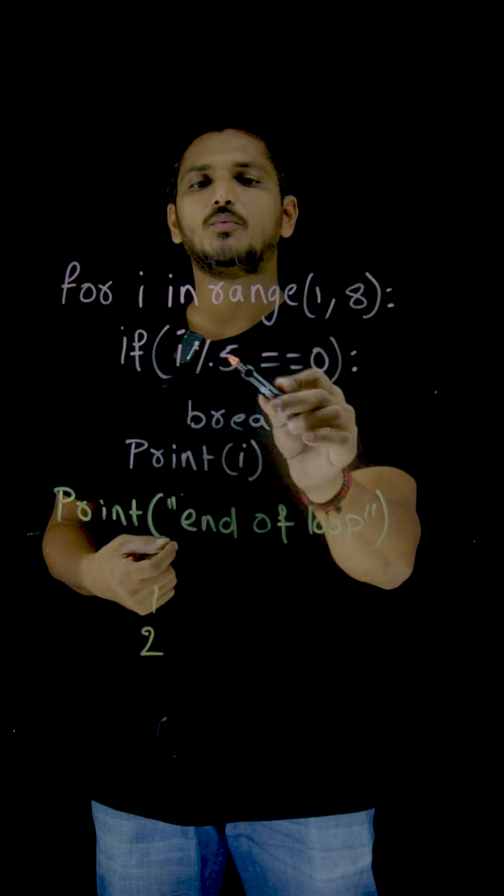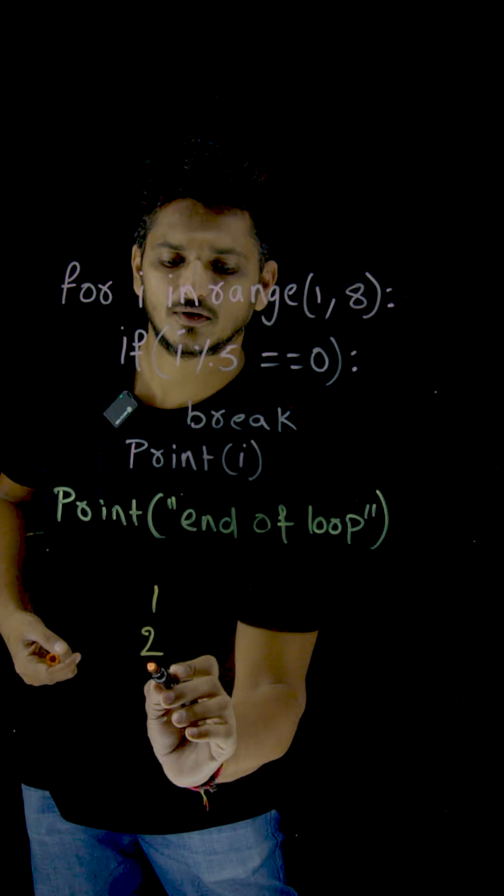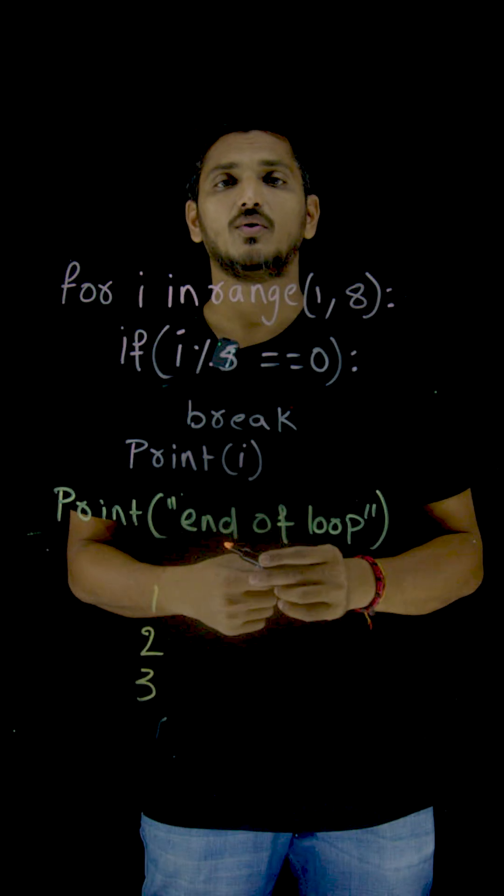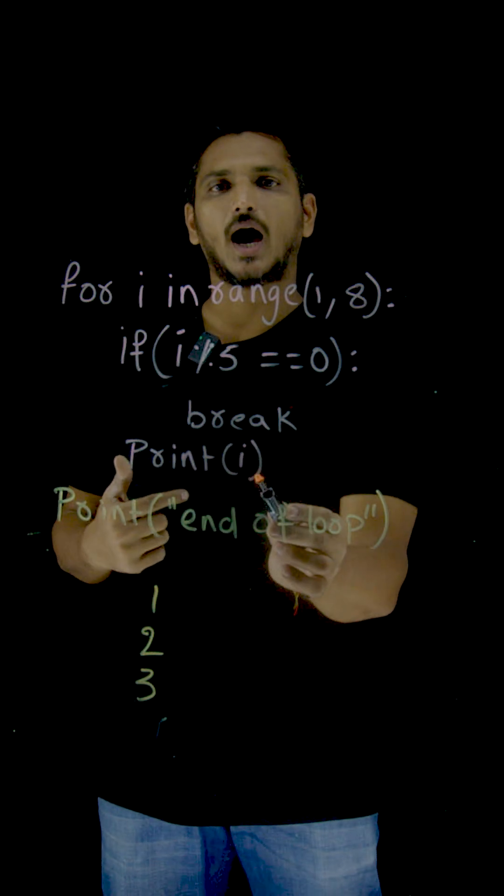Next, i is equal to 3. 3 modulus 5 not equal to 0. So come out of if condition, print i.